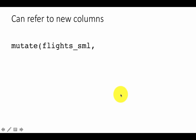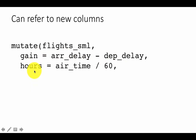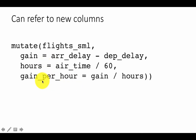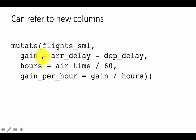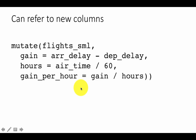One important point about mutate: when defining new columns, you can reference columns you are creating within the same mutate call. For example, we said gain = arr_delay - dep_delay, and hours = air_time / 60 — both new columns. Then we can create gain_per_hour = gain / hours, referencing the newly created columns gain and hours. So mutate can also refer to new columns that you are creating within the mutate call itself.